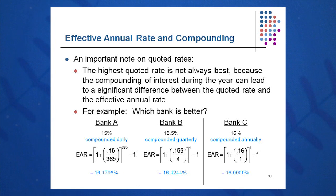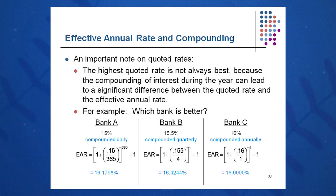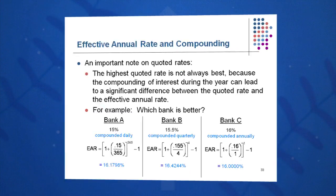Be careful: when you see 'compounded daily,' m equals 365. For bank B compounded quarterly, m equals 4. For bank C compounded annually, m equals 1. So m is simply the number of times compounded per year.